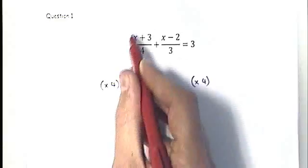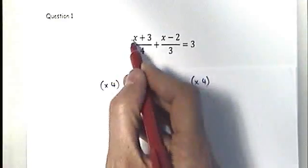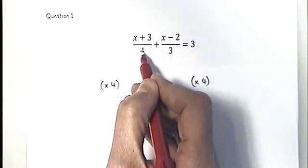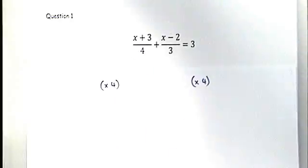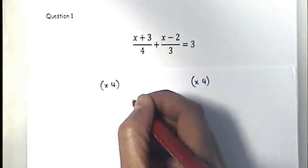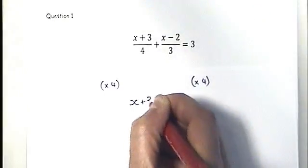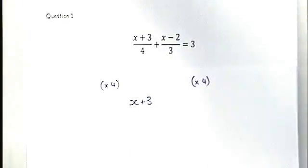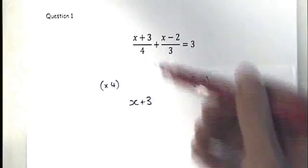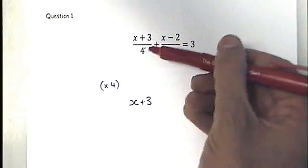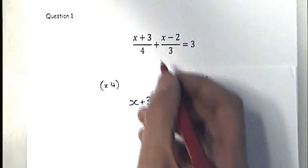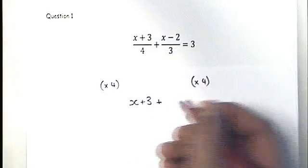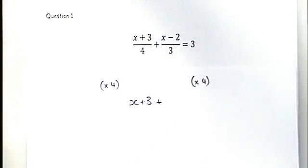The first term is (x + 3) divided by 4, and when multiplied by 4 that gives us just x + 3, because the divide by four and the times by four cancel each other out. For the second fraction we're not so lucky — the divide by three and the times by four don't cancel.